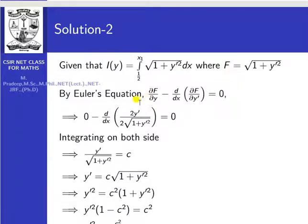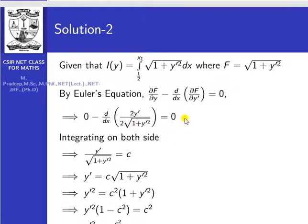So ∂F/∂y equal to 0. And for minus d/dx (∂F/∂y-dash): differentiating square root of (1 plus y-dash squared) gives 1/(2*root(1 plus y-dash squared)) times 2y-dash. So 2y-dash divided by 2 times root of (1 plus y-dash squared). This equals 0. Integrating both sides, y-dash divided by root of (1 plus y-dash squared) equals a constant c.